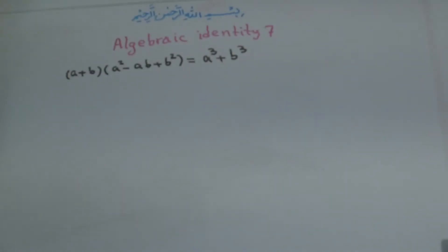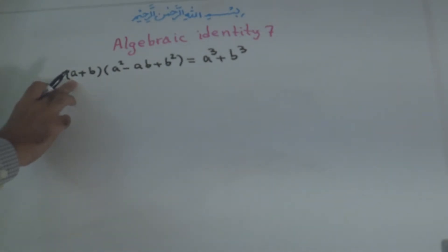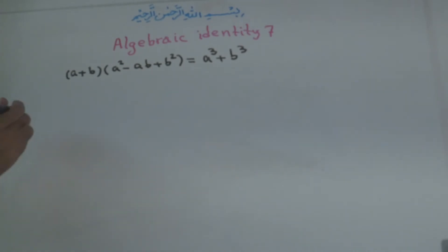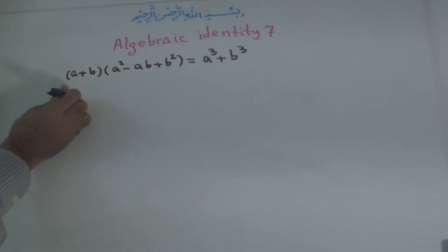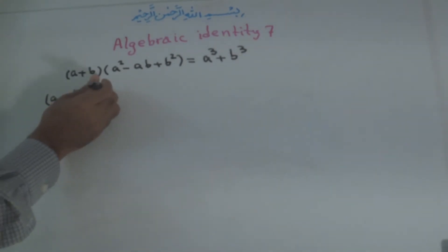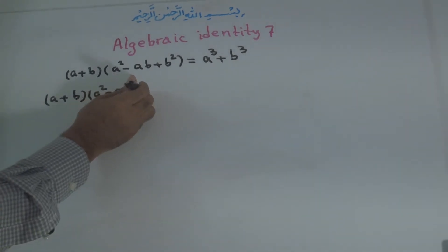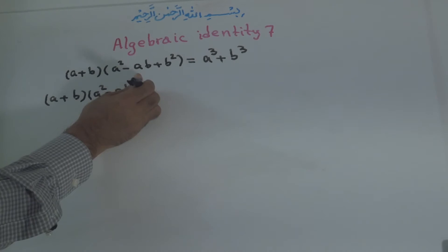Instead of multiplying this out directly, we write the first term to the power of 3 plus the second term to the power of 3. Now, to prove that this is right, we will multiply A plus B times A to the power of 2 minus AB plus B to the power of 2.